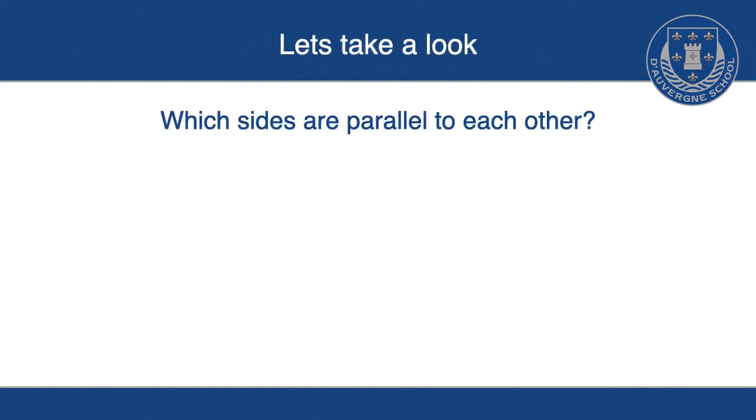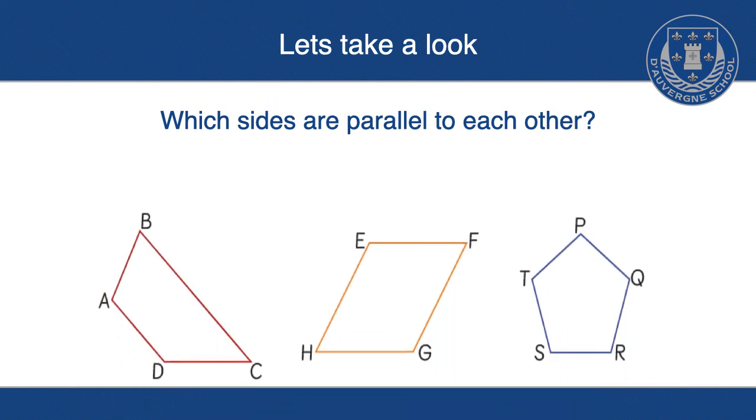And then here, if we have another look, which sides are parallel to each other, this is where your arrows will come in handy. So if we have a look, so we've got lines A and D. We've got lines B and C. We've also got A to B, D to C. All sorts of lines that we can create here.